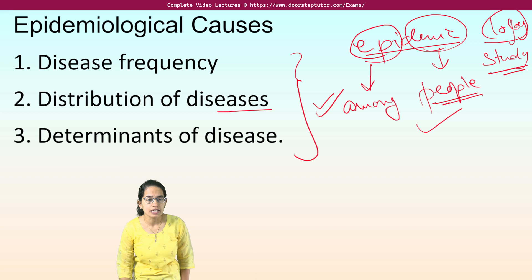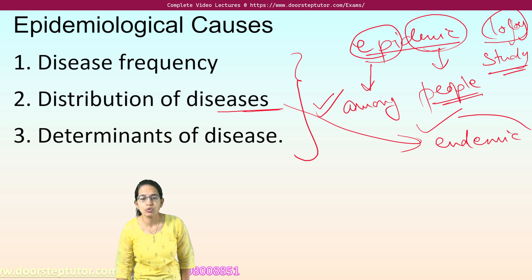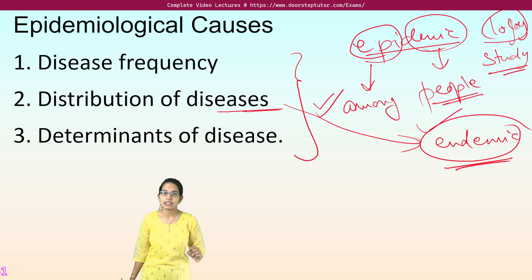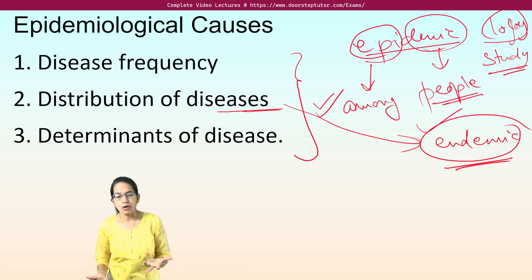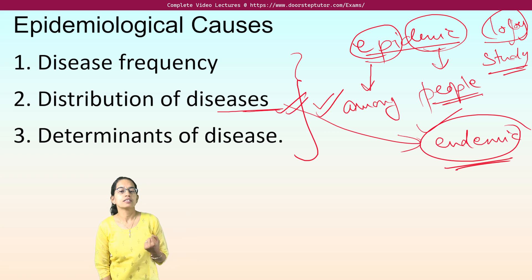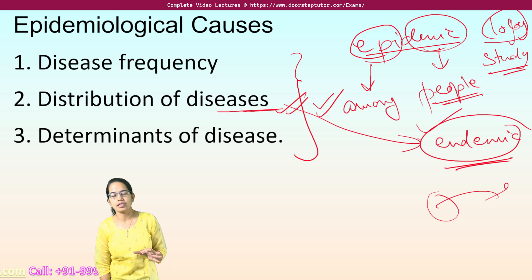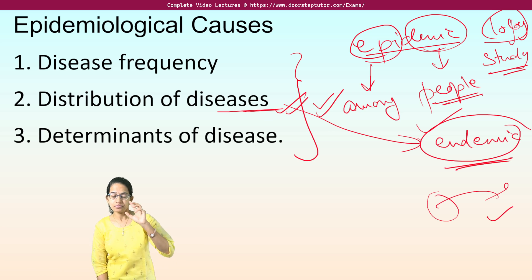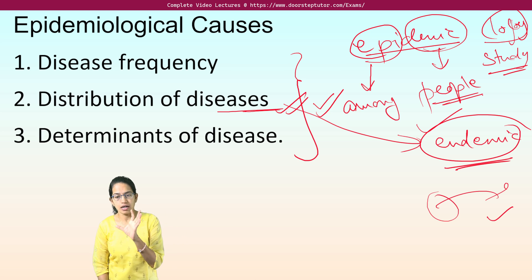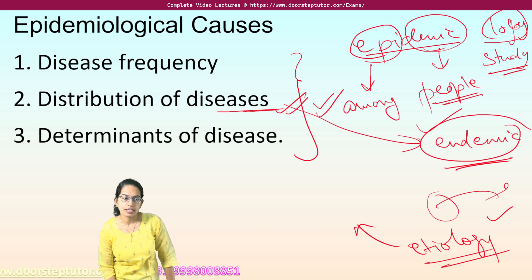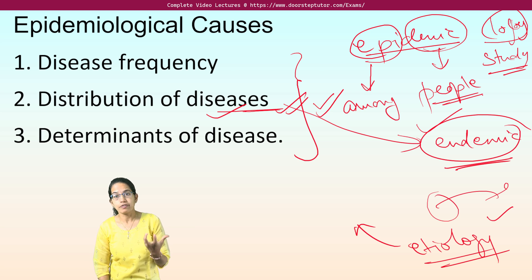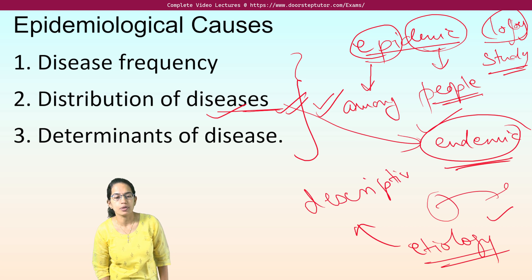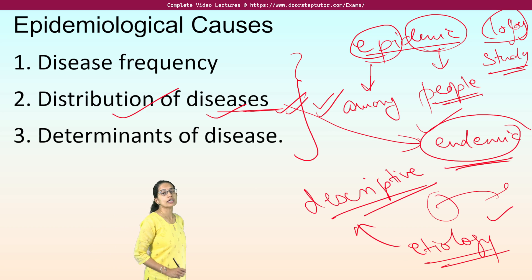The second aspect is distribution of the disease. Certain regions are endemic, meaning those diseases are prevalent in specific areas. For example, vector-borne diseases are often found in regions with water logging or water accumulation. Such local factors affect the distribution of the disease from one geographical area to another. The feature of epidemiology which explains this etiology — the cause of disease — is known as descriptive epidemiology.